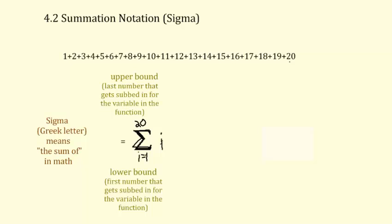So the Greek letter sigma means the sum of in math. The number at the bottom is called the lower bound - the first number that gets subbed in for the variable. The top number is the upper bound - the last number that gets subbed in. If you added all this up, a quick way: 1 and 20 add to 21, 2 and 19 add to 21, 3 and 18 add to 21. That pattern continues inward to 10 plus 11, which is also 21. So there's 10 pairs of 21s. 10 times 21 is 210.